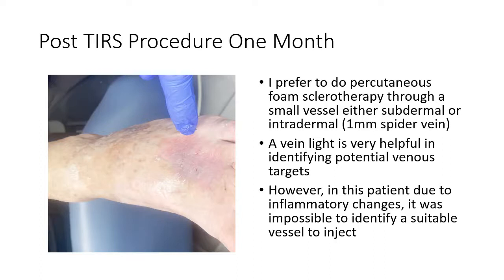A vein light is very helpful many times in identifying these potential targets. You have to be close to the ulcer bed within about 5 centimeters, direct the needle towards the ulcer bed, and inject slowly. However, in this patient, due to the marked inflammatory changes, I could not do the percutaneous technique. Hence, I did the TIRS technique, which is simply ultrasound-guided to a deeper vessel.